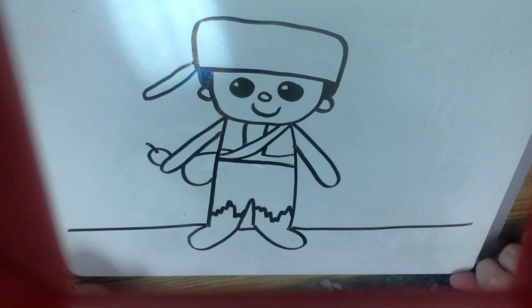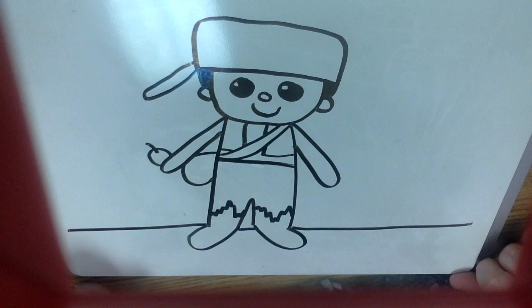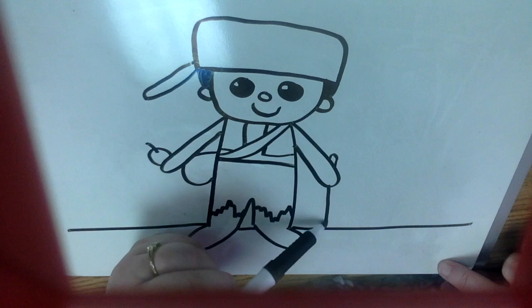When you color that in, it's going to look just like an apple. On this side you might give him a walking stick. He's got to walk through the wilderness - might need a walking stick.